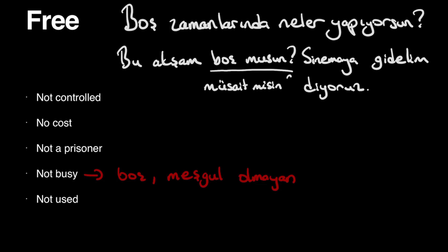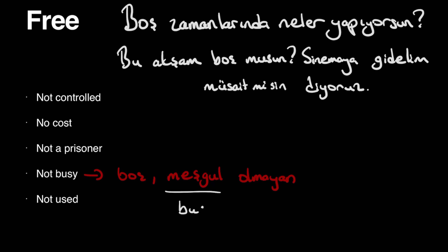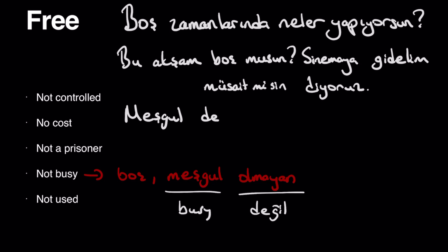Using müsait misin? would sound way better. Meşgul olmayan means someone who is not busy — olmayan, take it as değil. Meşgul değilsen bir şey soracağım — if you are not busy, I'm going to ask something.